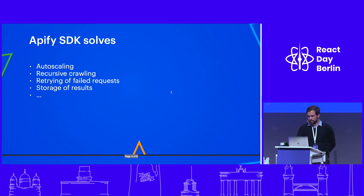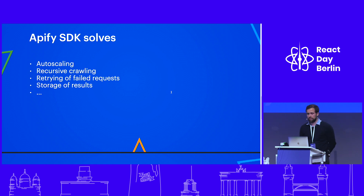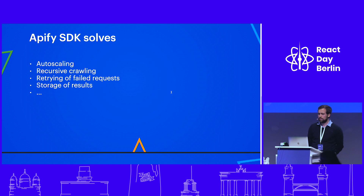So what can it help you with? It can help you with autoscaling. If you run it on a platform as a Docker container, we solve the autoscaling for you. Whether you run it locally or on the cloud, we take care of recursive crawling, and you don't have to worry about retrying failed requests. Even on localhost, we give you storage of results, so you don't have to worry about writing to a JSON file, for example.